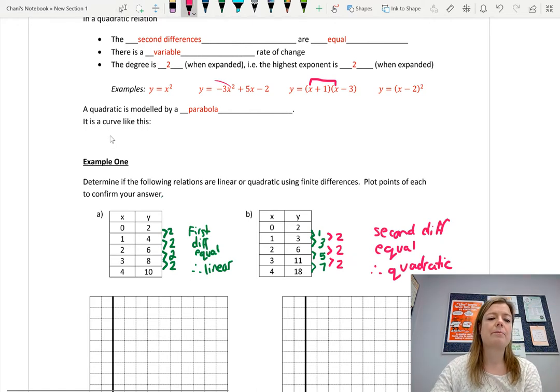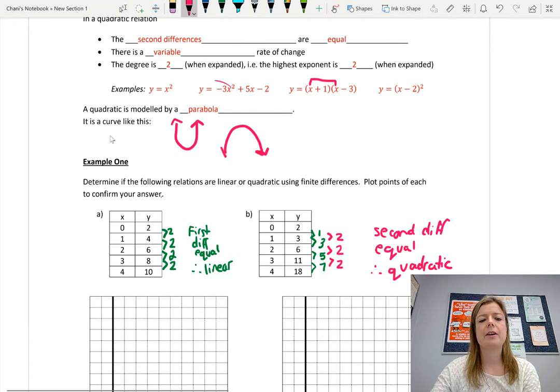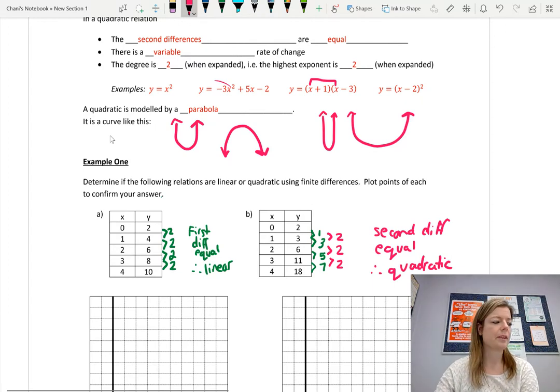Now, a quadratic is modeled by a parabola. So it's a curve that looks like this. It may open up, or it may open down. Parabolas are always symmetrical. They always have a lowest or highest point. And they open up or down. They might be narrower, like that, or they could be much wider, like that. We will be learning what determines that as we go. So you could have a min, or you could have a max. But again, we'll be learning about that as we go.